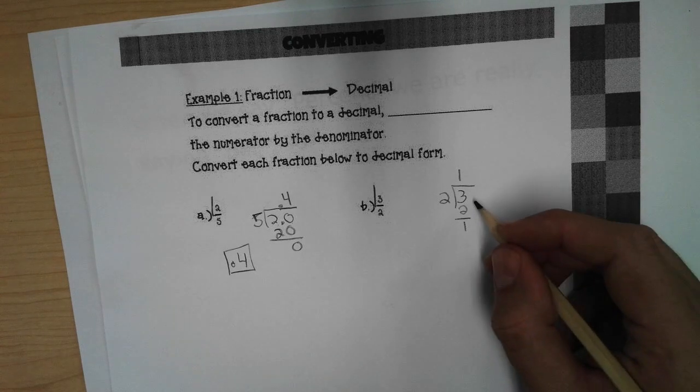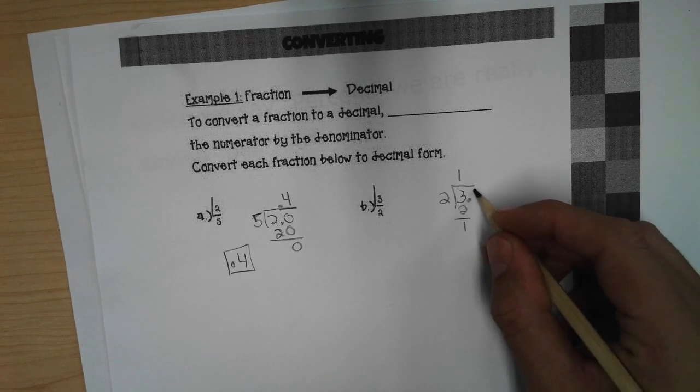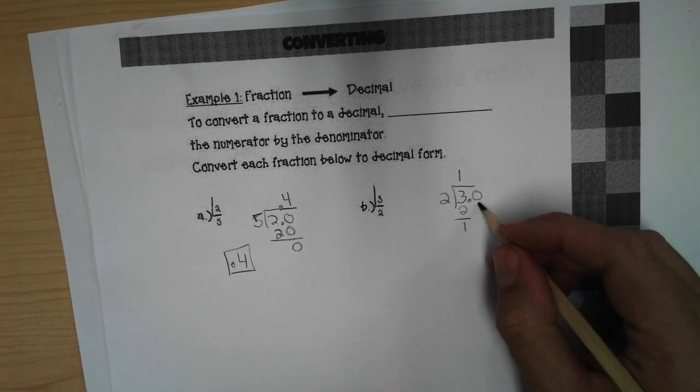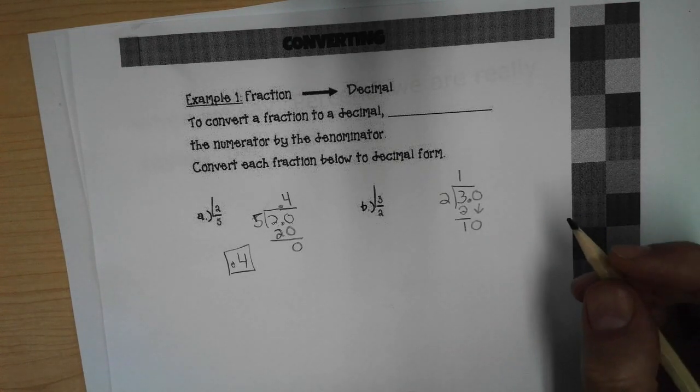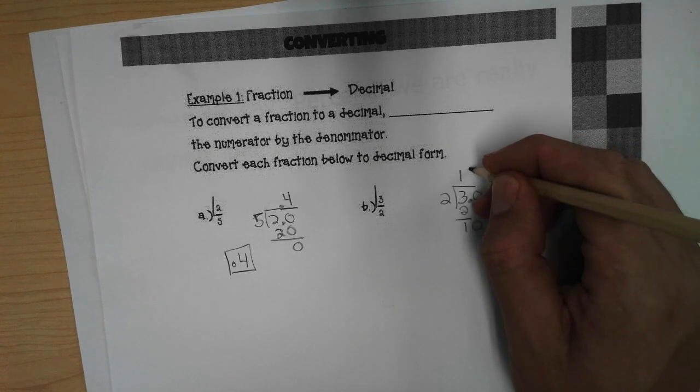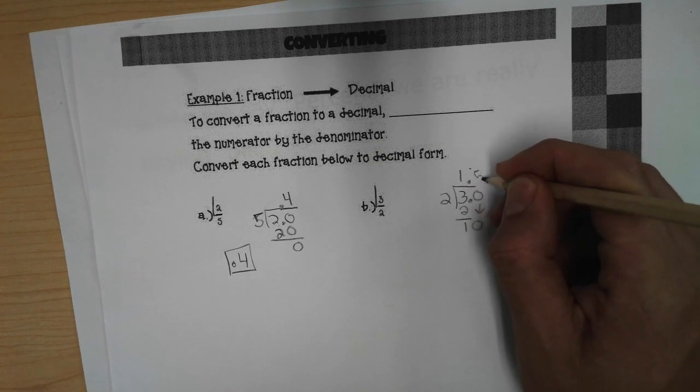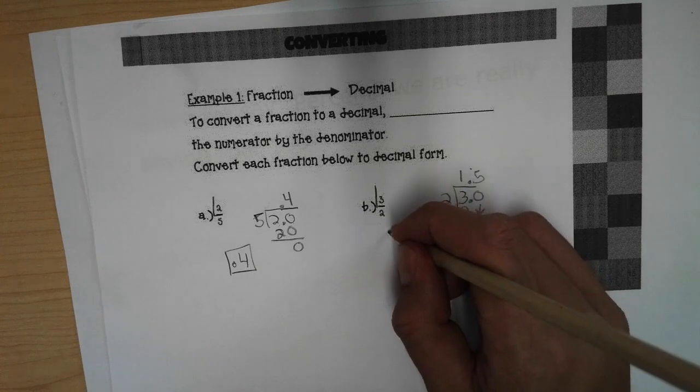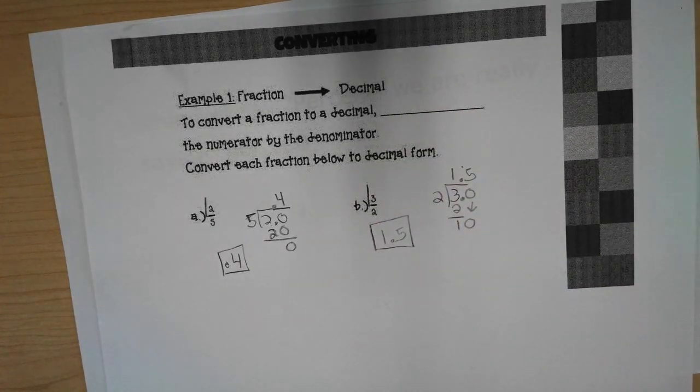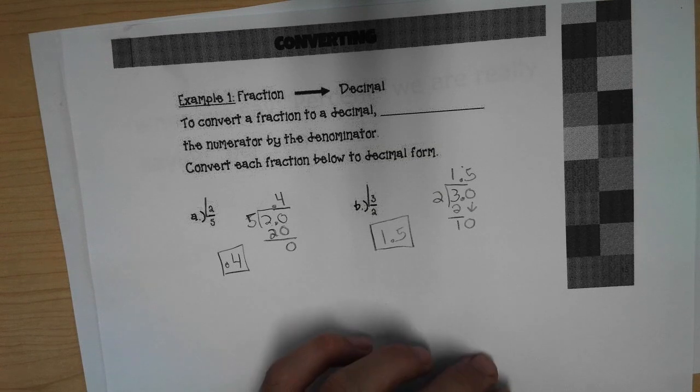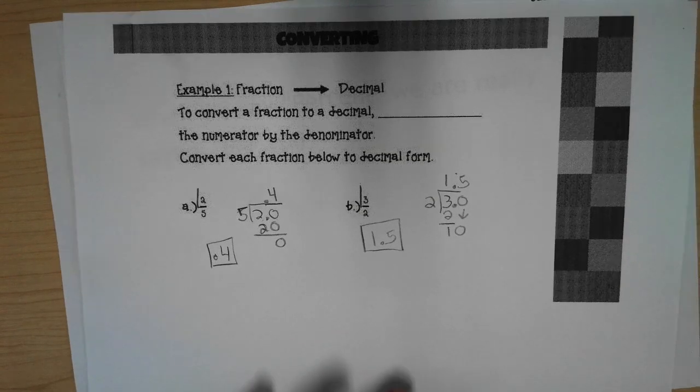Since we want to convert it to a decimal, we have to add a decimal place and add a zero. Bring down my zero. Two goes into ten five times. And we get one and five tenths. So the answer is one and five tenths. That's how you convert a fraction to a decimal.